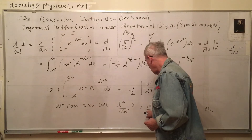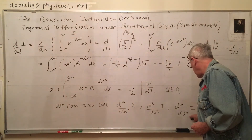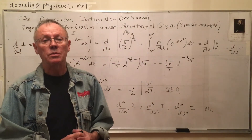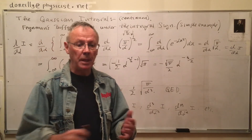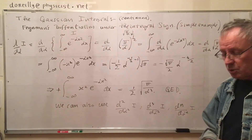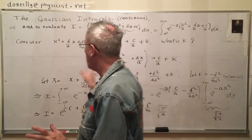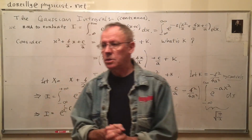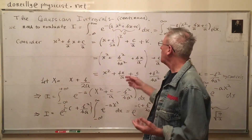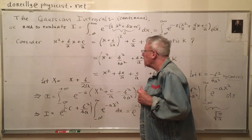We can differentiate as many times as we want: taking d²/dα² brings down x to the fourth, and so on. You can try those exercises at home — in general, d^n/dα^n of I gives you increasingly higher powers of x in the integrand. Now let's wrap this up and go to the more general case where b and c are non-zero. I'll change the notation from alpha, beta, gamma to a, b, and c. Other things such as the differential operator approach I'll leave for a separate video.